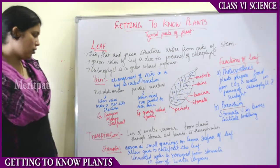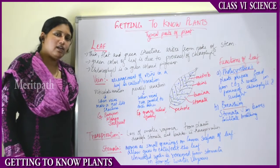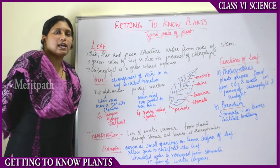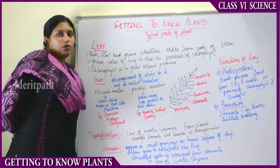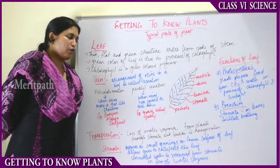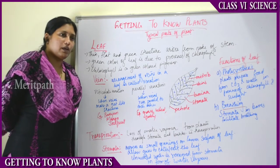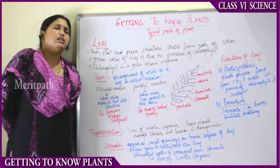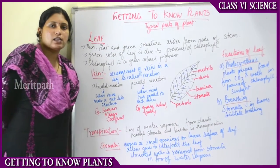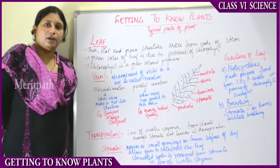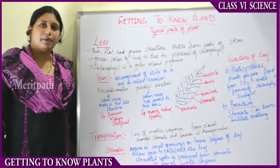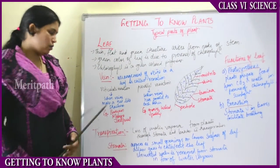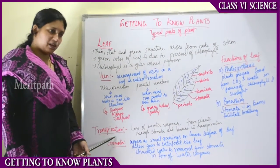Transpiration is the process by which the plant loses excess water and releases it into the atmosphere. In the presence of sunlight, the excess water in the leaf evaporates and goes up into the sky in the form of water vapor. This method of loss of water is known as transpiration.